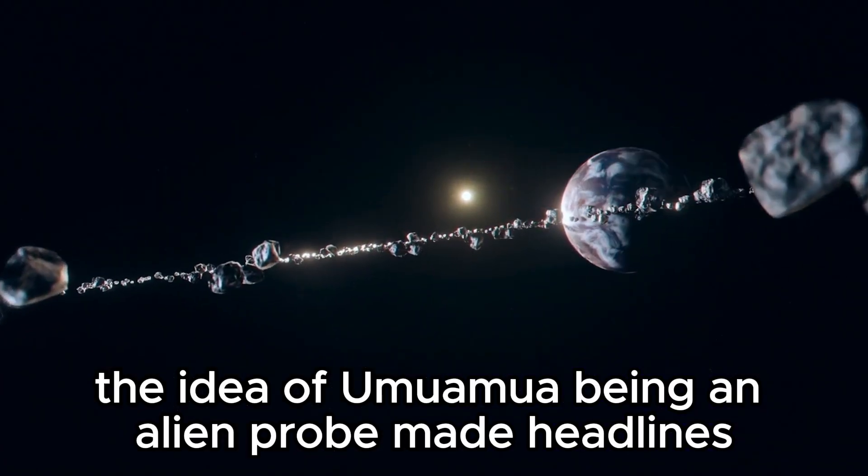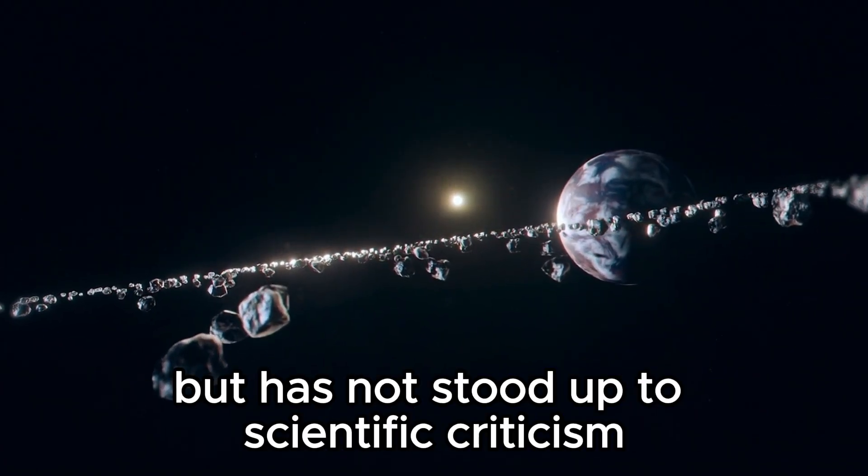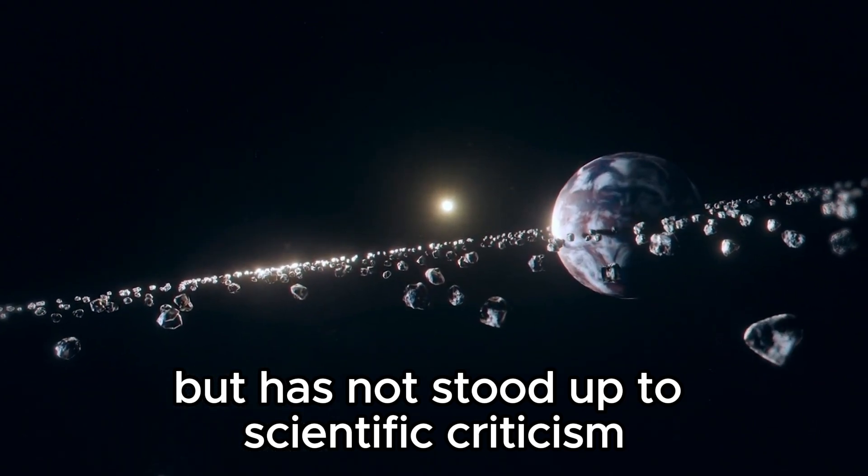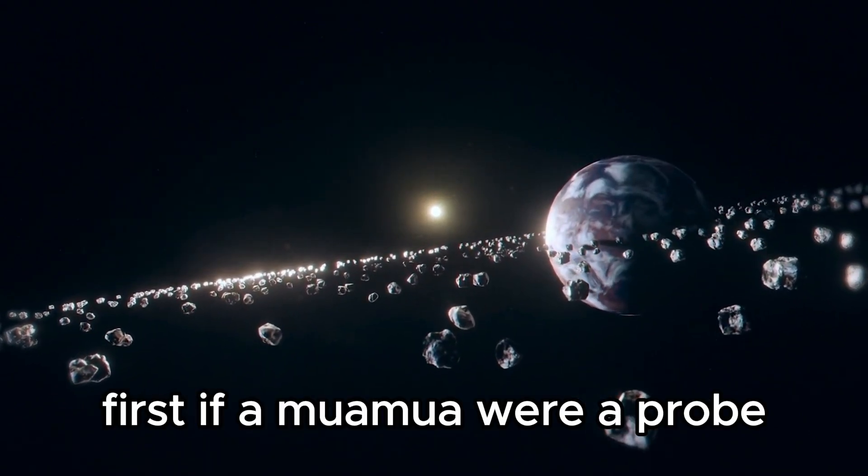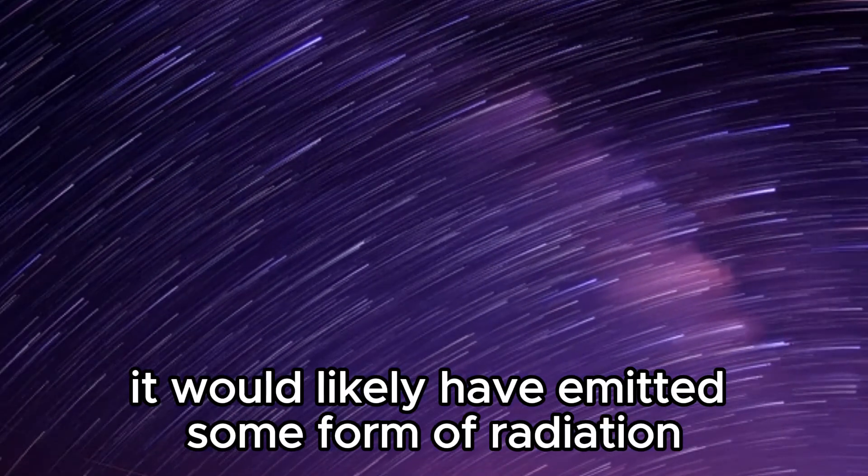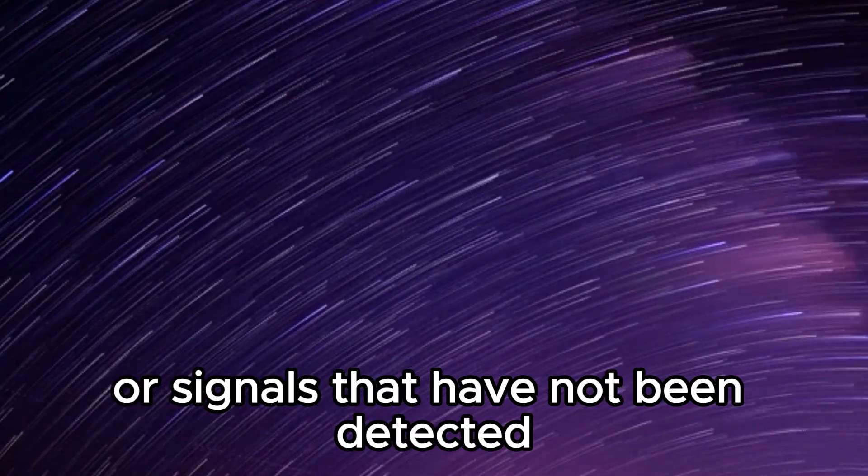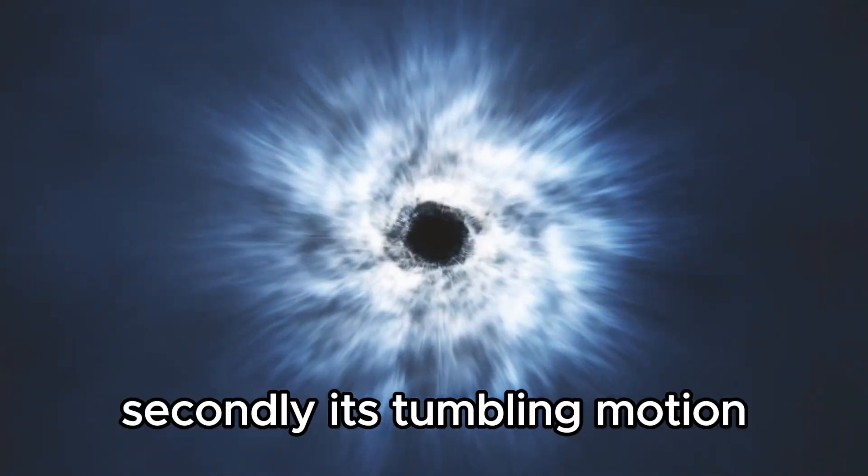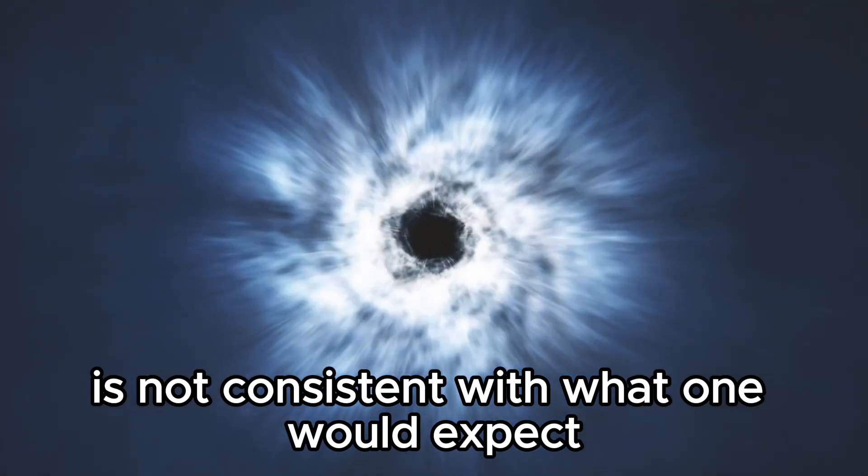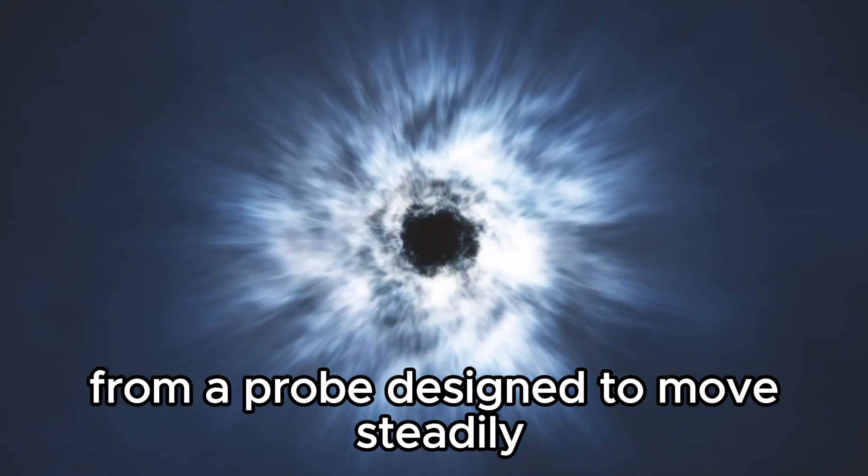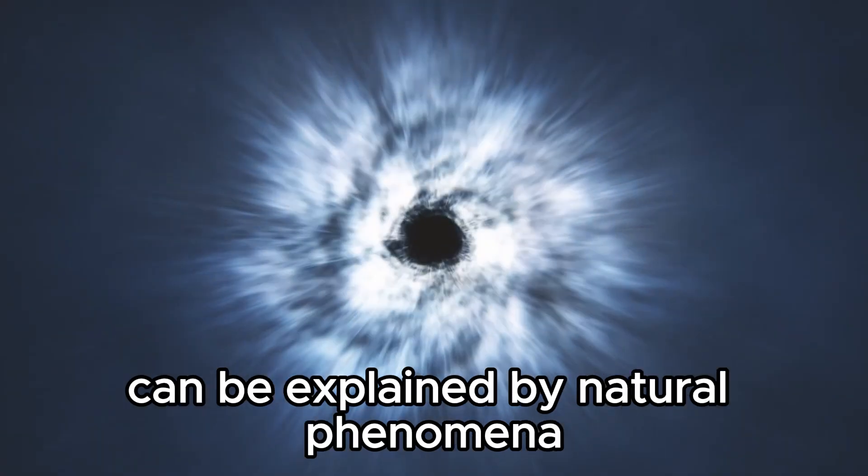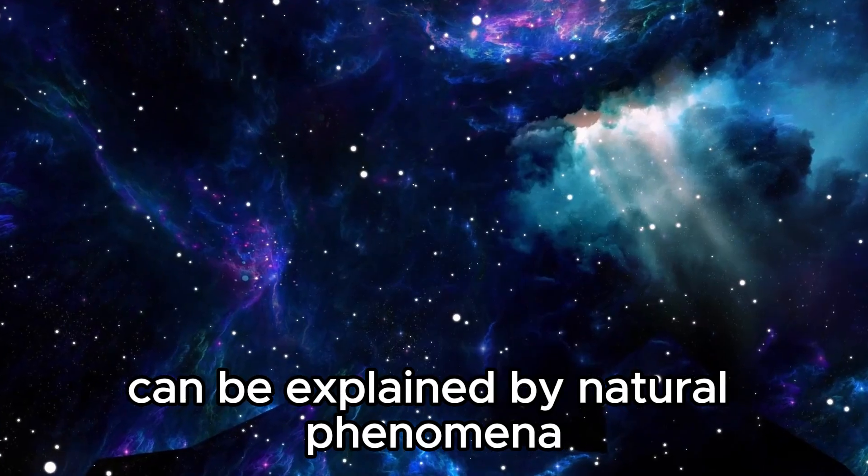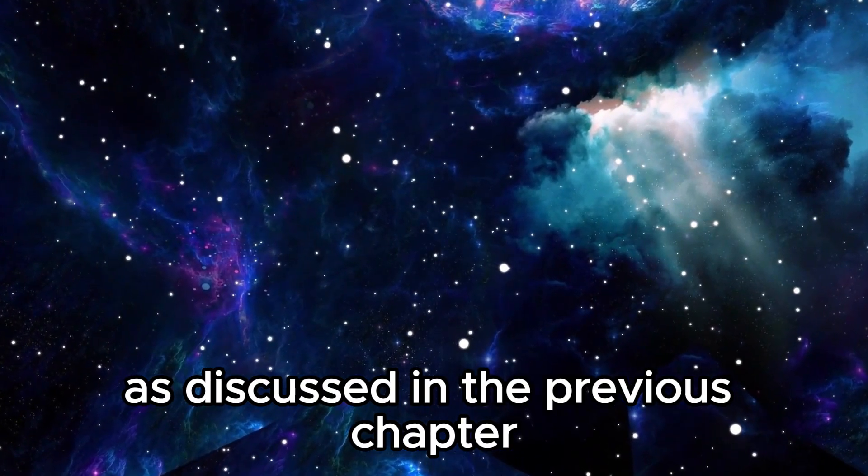The idea of Oumuamua being an alien probe made headlines but has not stood up to scientific criticism. First, if Oumuamua were a probe, it would likely have emitted some form of radiation or signals that have not been detected. Secondly, its tumbling motion is not consistent with what one would expect from a probe designed to move steadily or collect data. The object's trajectory can be explained by natural phenomena, as discussed in the previous chapter.